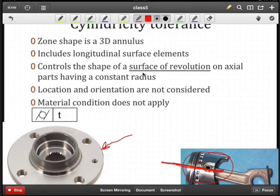If I look at this part over here, there could be multiple cylindrical features such as this outer surface, or perhaps this inner surface, or this outer surface here. So we can have multiple cylindrical features. And each one of those could represent some type of shape that we want to control with the cylindricity tolerance.